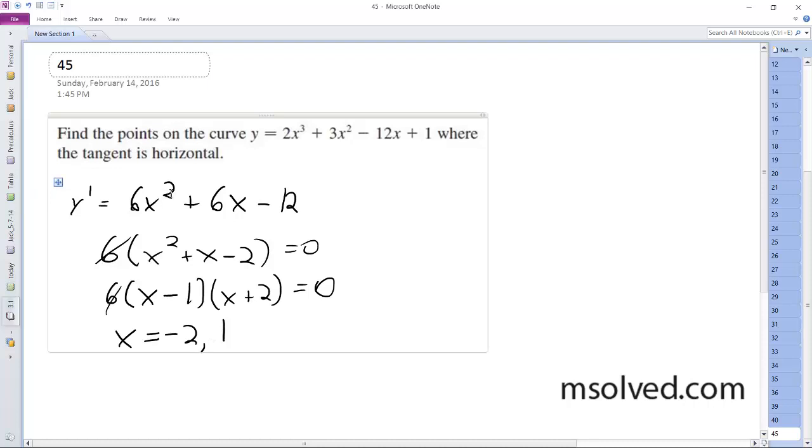All right, so then what you do is you plug these back into the original equation. For negative 2, you end up with negative 16 plus 12 plus 24 plus 1, and you end up with 21.